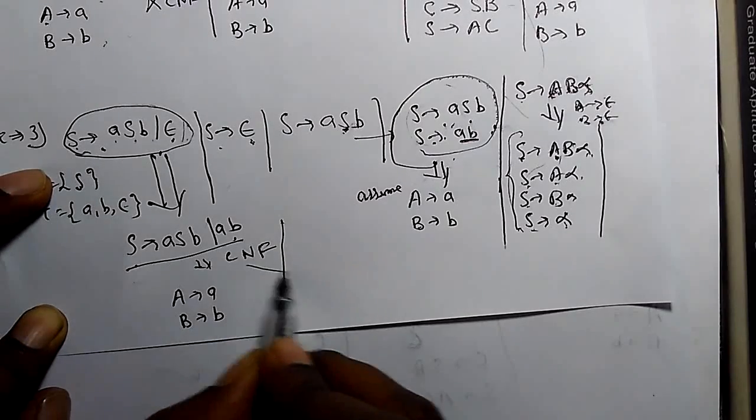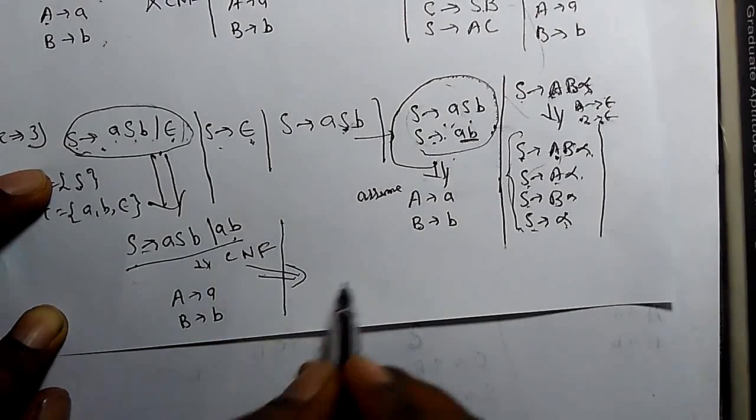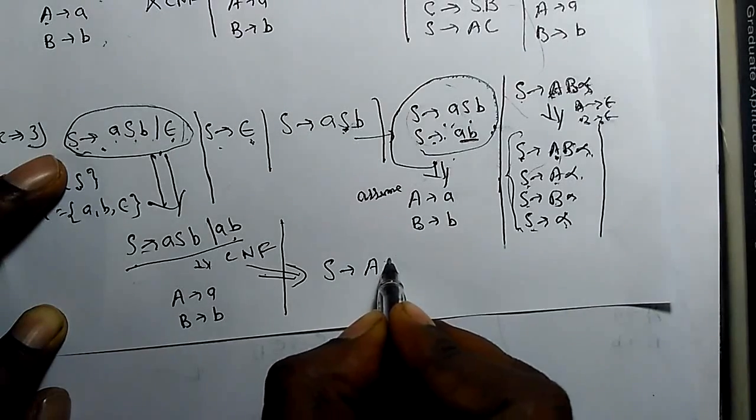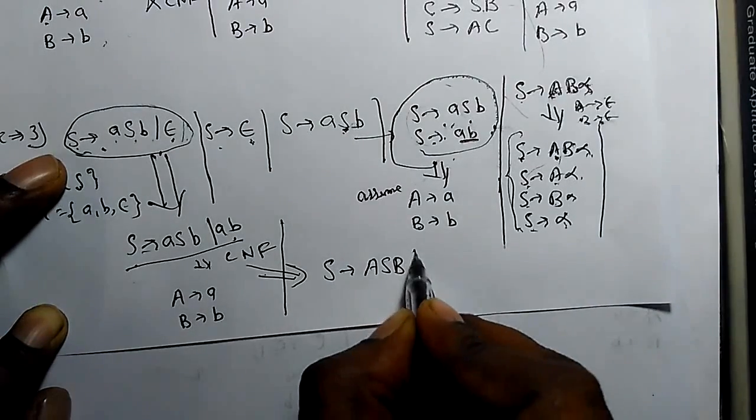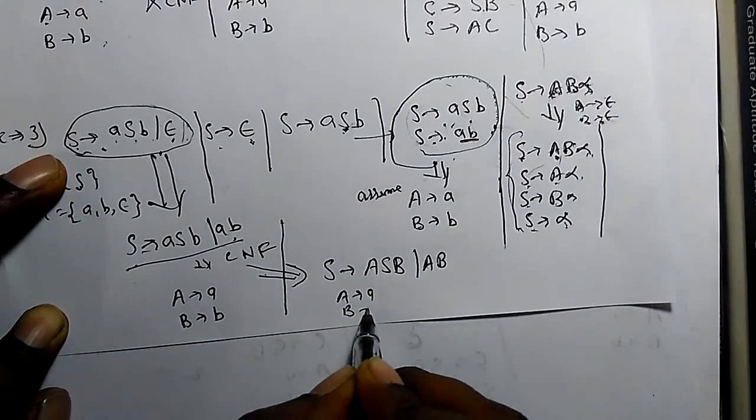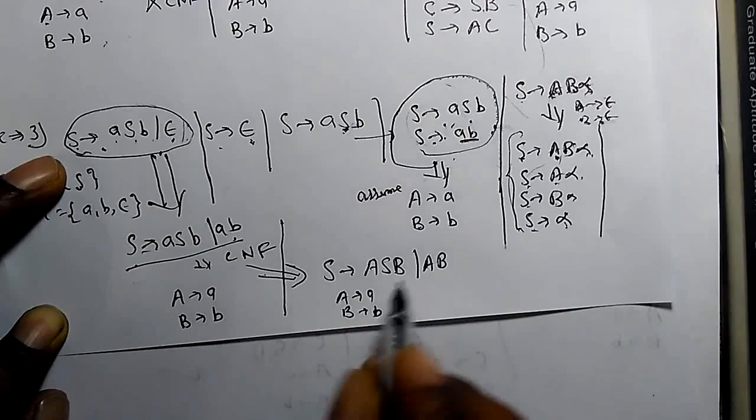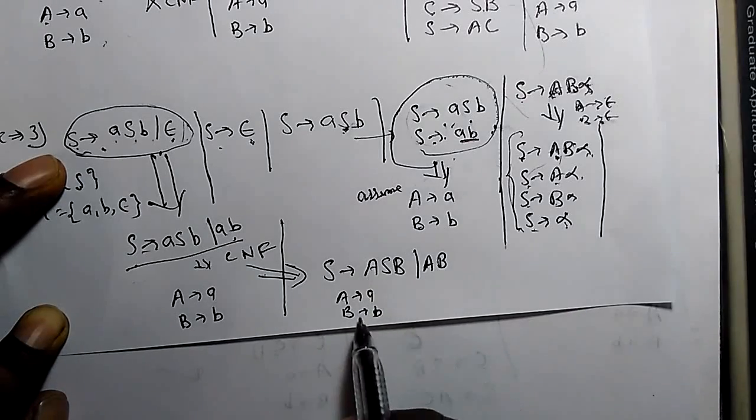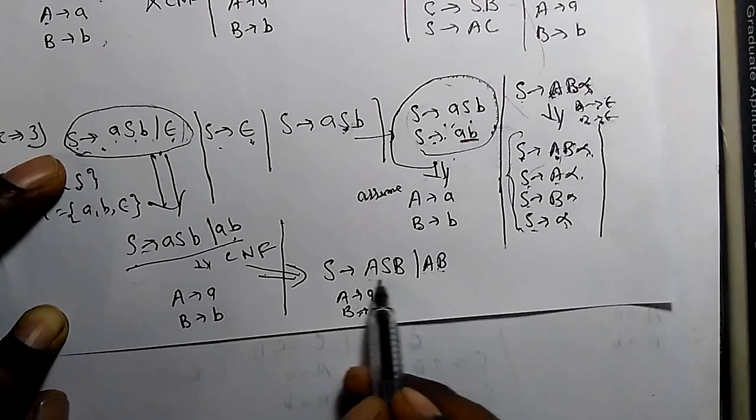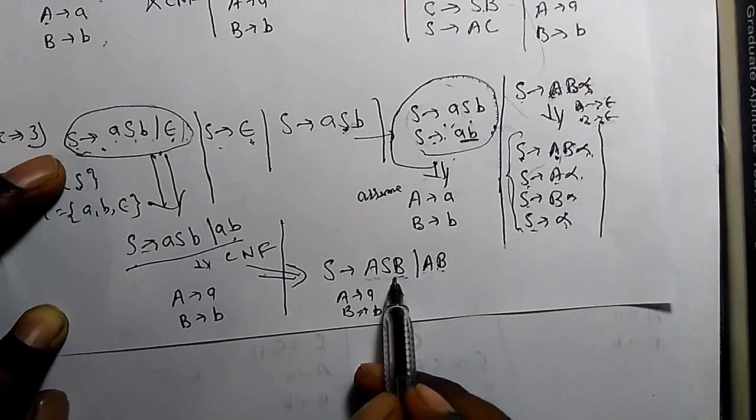So this grammar will be converted into S derives capital A, S capital B, or AB, and A derives a, and B derives b. Is it in CNF? These two productions are in CNF. S derives AB is also in CNF, but here we can see there are three variables.